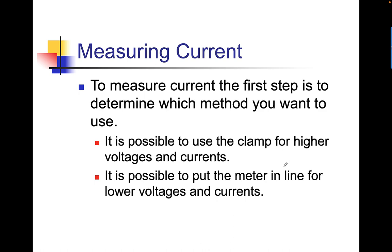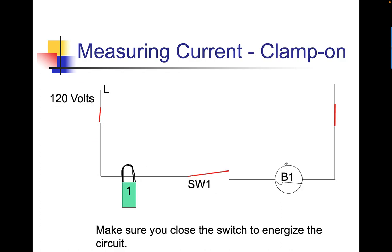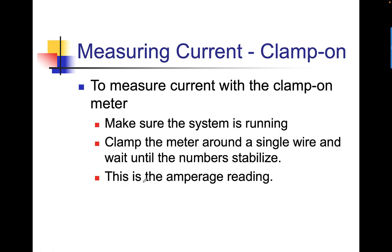To measure current, first determine which method you want to use. It's possible to use the clamp meter for higher voltages and currents, or to put the meter in line for low voltage and currents. 90% of the time you're going to use the clamp meter. Make sure you close the switch to energize the circuit. You'll clamp the meter across one wire — let me make this clear: one wire. You can't clamp across L1 and neutral or L1 and L2. As long as the circuit is operational, it's going to show a number. Clamp the meter around a single wire and wait until the number stabilizes — that's your average reading.